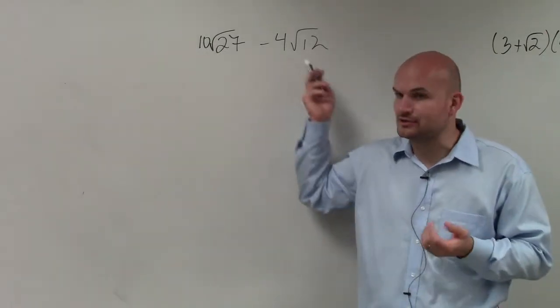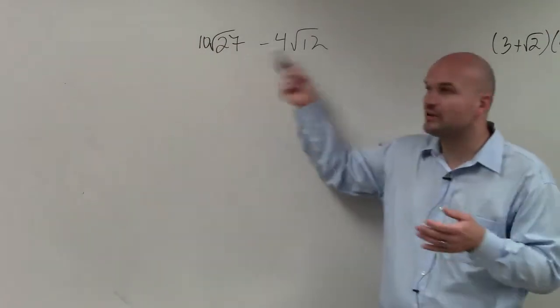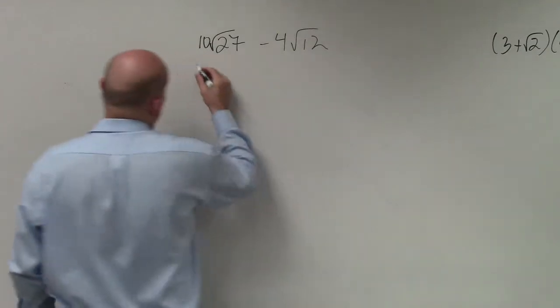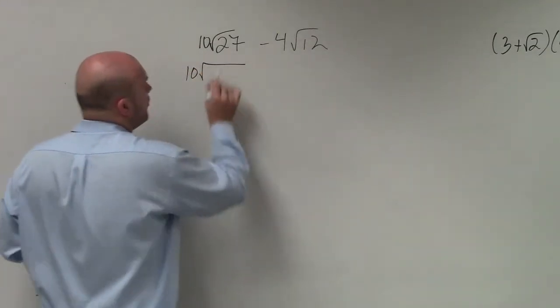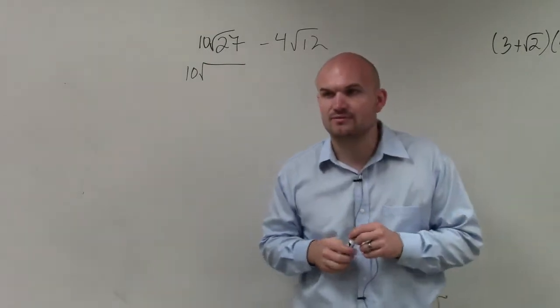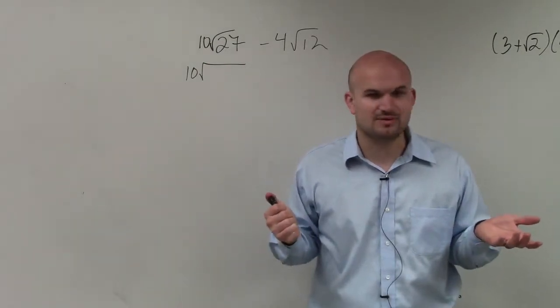Now, you can use the factor tree like we've learned before. You could break this down and then take out the pairs of numbers, because it's the square root. Or we could also go ahead and take a look at this and rewrite this as what square number divides into 27? What number that can take the square root of divides into 27?